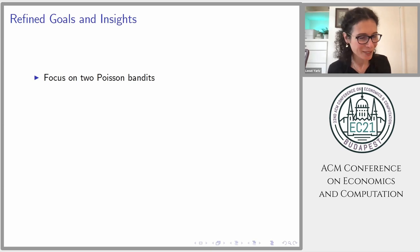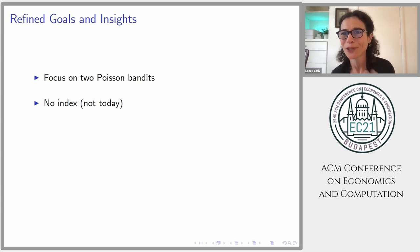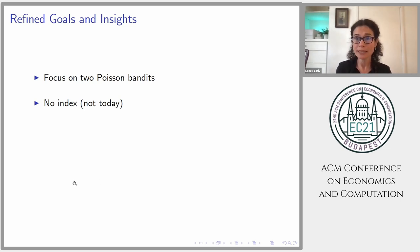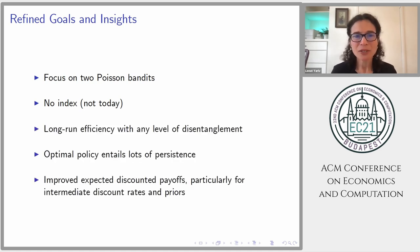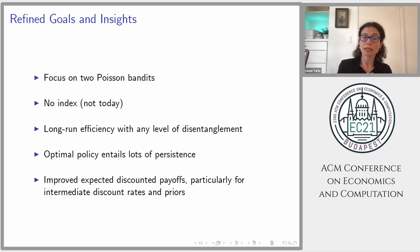Just to foreshadow what I'll show you: we're going to focus on two Poisson bandits. The first result in these settings is that there is no index — the beautiful remarkable result by Gittins no longer holds here. What we will show is that in this setting you get long-run efficiency with any level of disentanglement. The optimal policy entails lots of persistence — very little switching. And we see improved expected discounted payoffs, particularly pronounced for intermediate discount rates and priors.